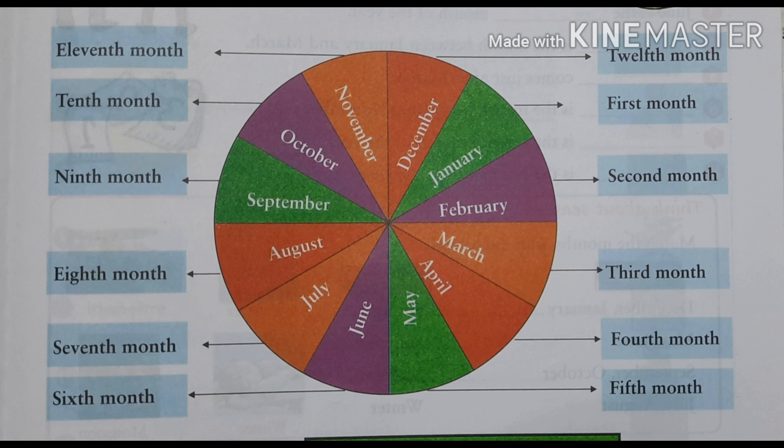February is the second month. March is the third. April is the fourth month. May is the fifth. June is the sixth month. July is the seventh. August is the eighth. September is the ninth month. October is the tenth month. November is the 11th. And the last month is December — that is the twelfth.